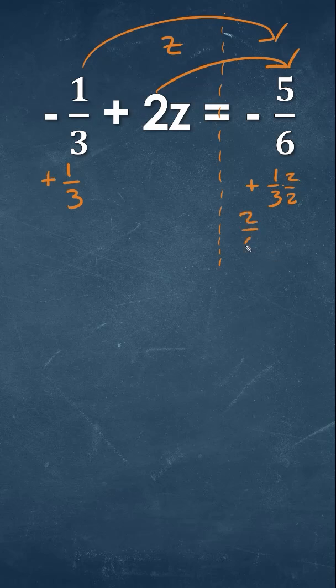That's going to give us 2 over 6 minus 5 over 6, and if we simplify that, that's negative 3 over 6, which simplifies to negative one-half. This is going to cancel out,